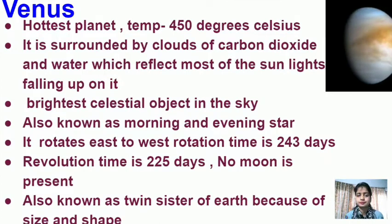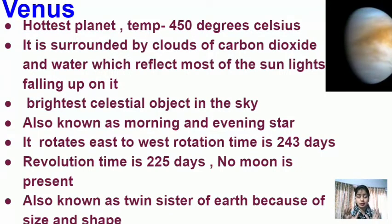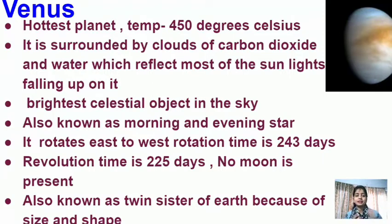Venus is the hottest planet with a temperature of 450°C. It is surrounded by clouds of carbon dioxide and water, which cause high reflection of sunlight. It is the brightest planet of the solar system.